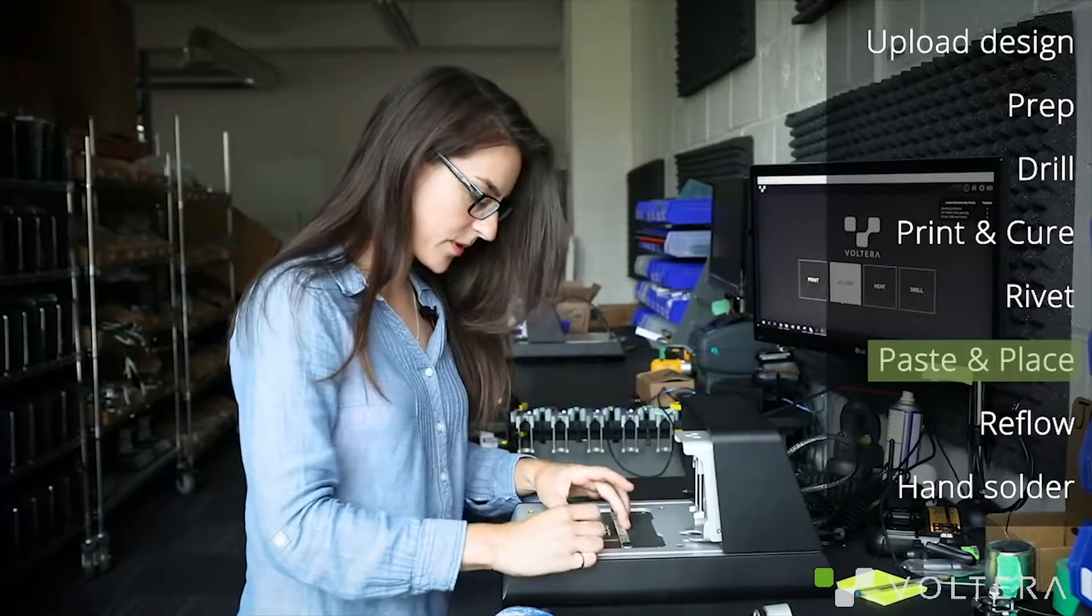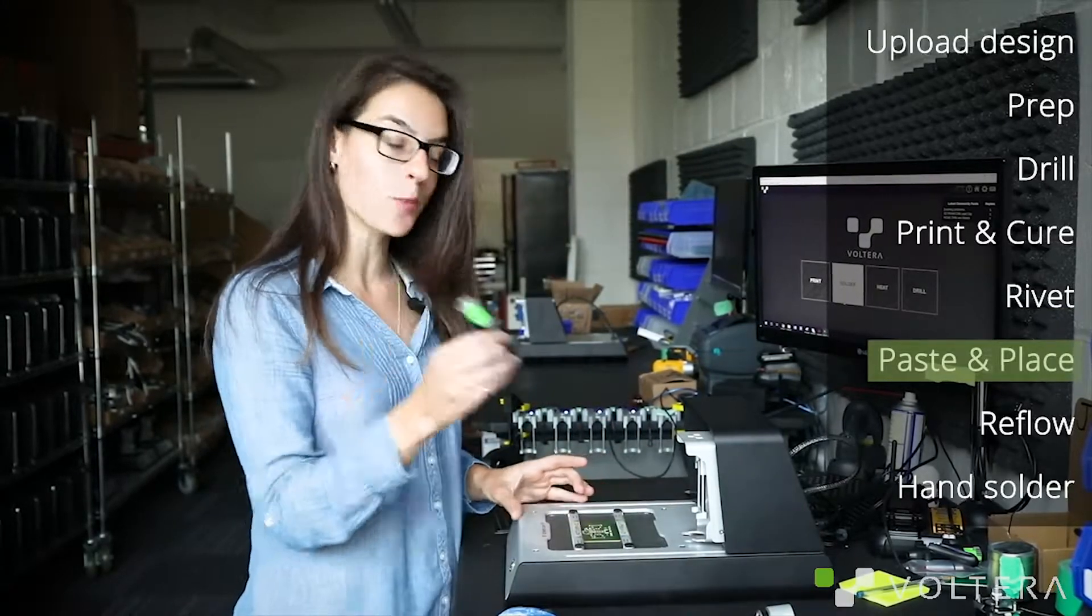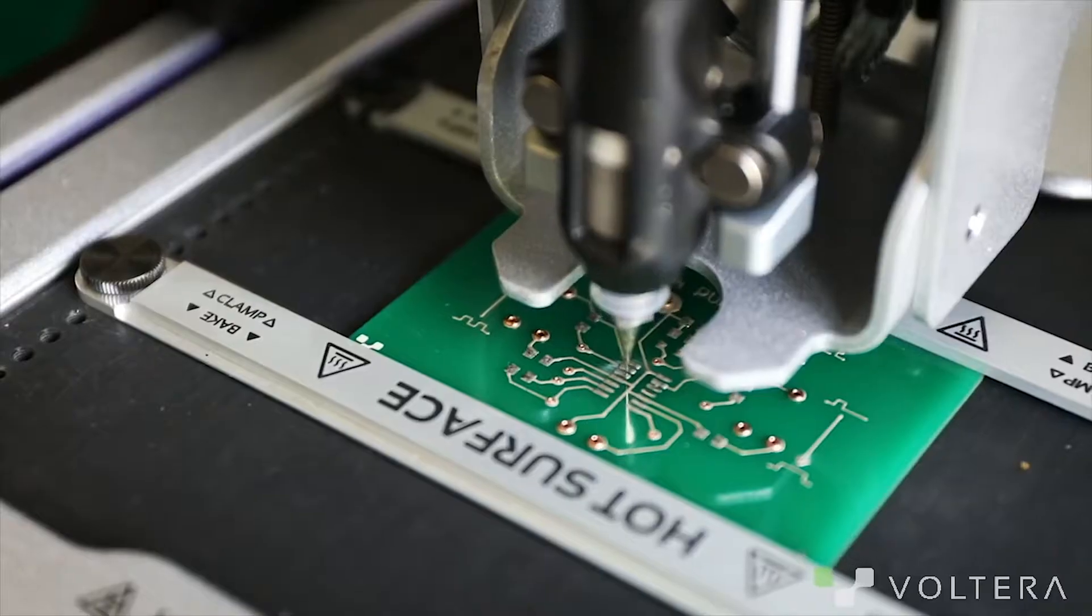Okay, with that done, we can clamp the board back onto the printer and go ahead, snap in the solder paste dispensers so that we can get some solder onto these pads.